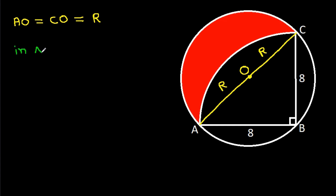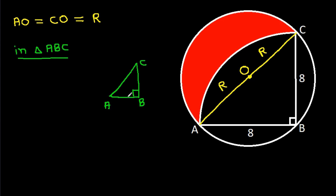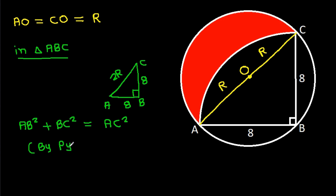Now, angle ABC is 90 degrees, AB is 8, BC is 8, and AC is 2R. Using the Pythagorean theorem: AB squared plus BC squared equals AC squared, that is 8 squared plus 8 squared equals 2R squared.